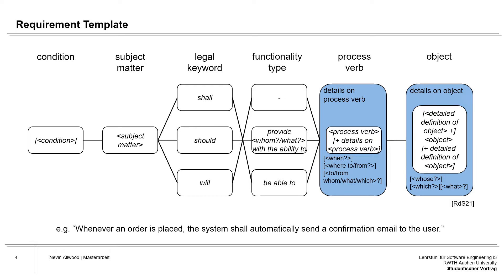a subject matter, one of three legal keywords depending on the intended commitment, one of three functionality types that provide additional information based on the functionality that the requirement shall express, a process verb and details refining it, and an object again with optional details refining it. Identifying these interrelated elements within the patent text and extracting them was the main challenge of this thesis.